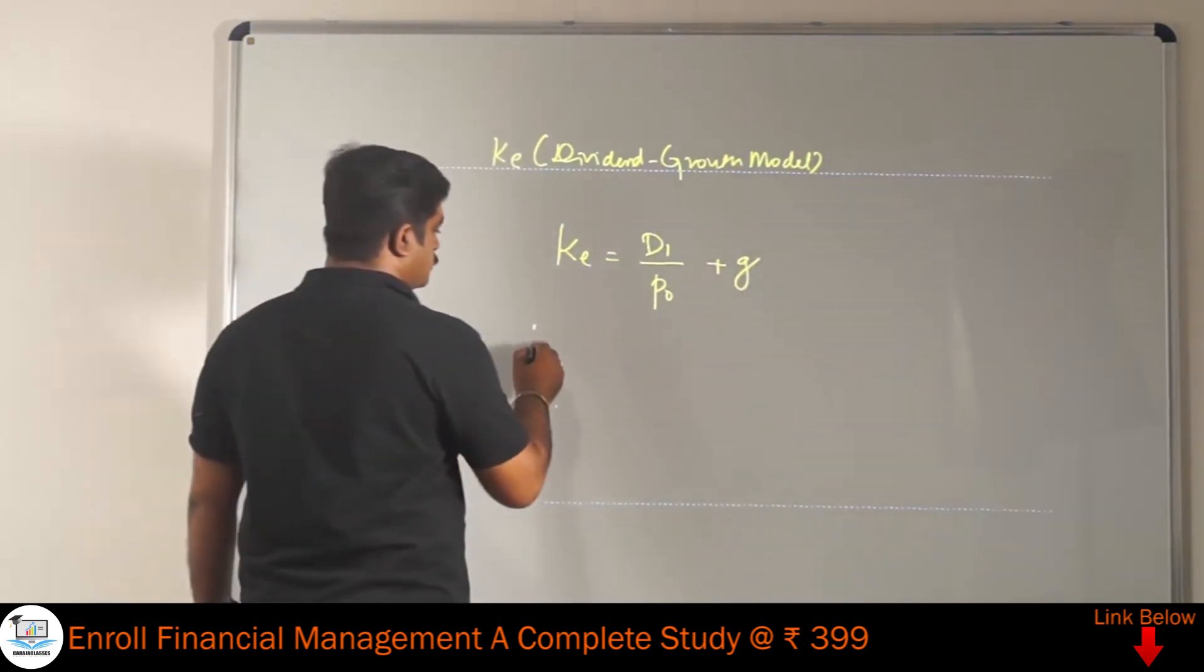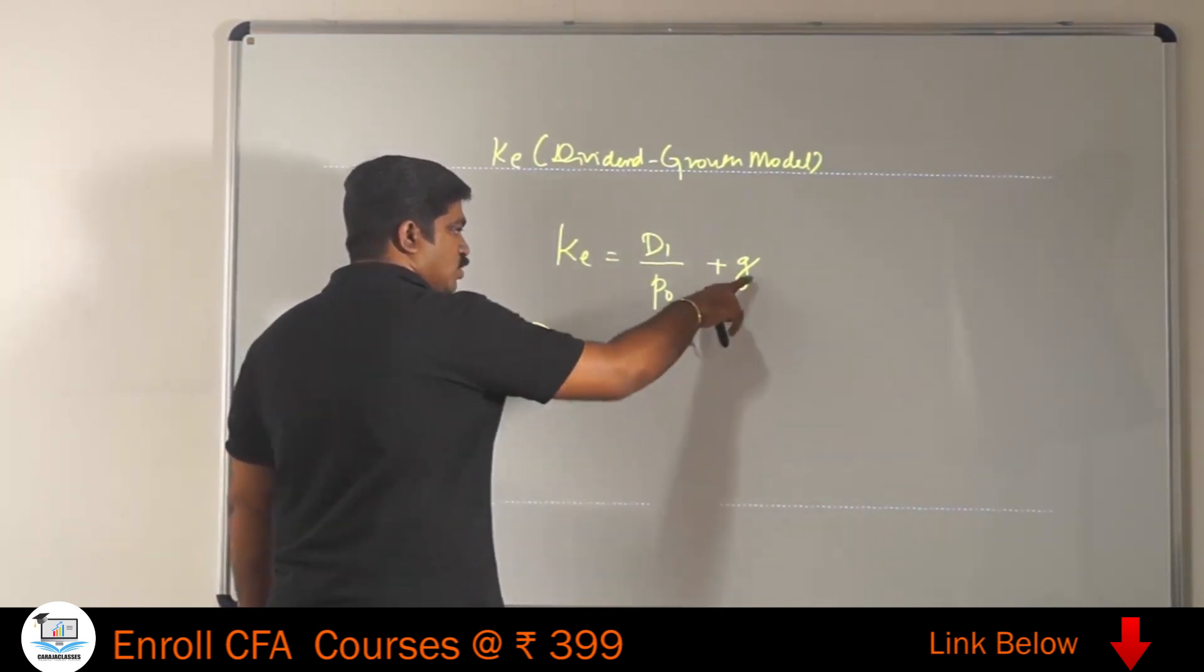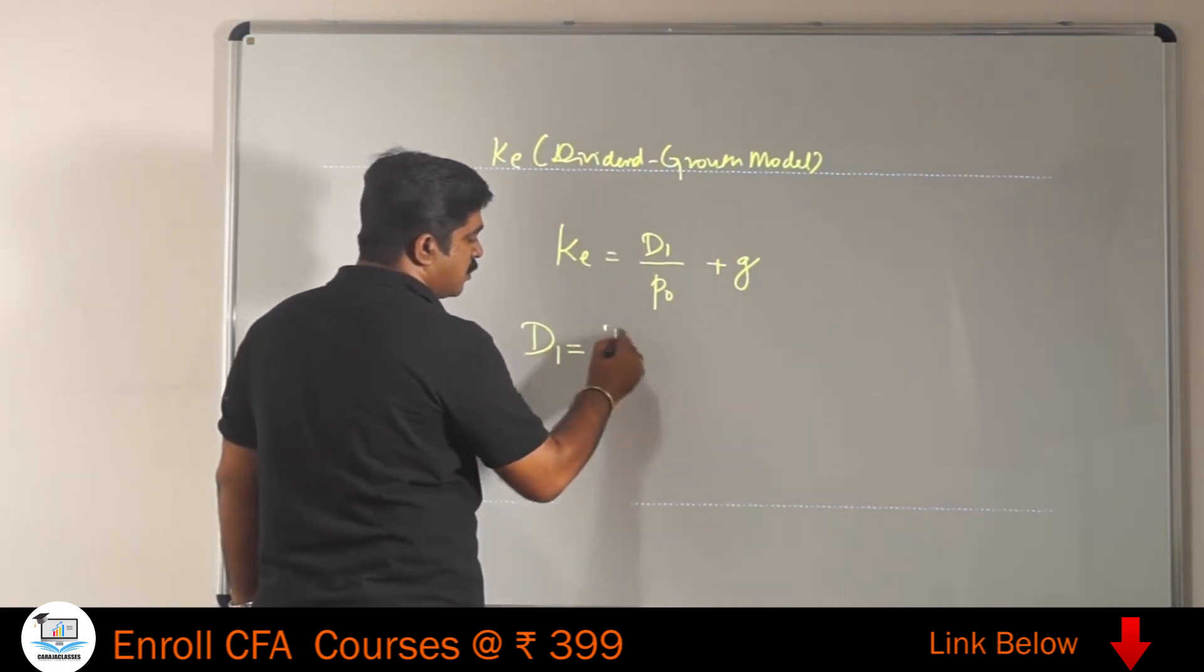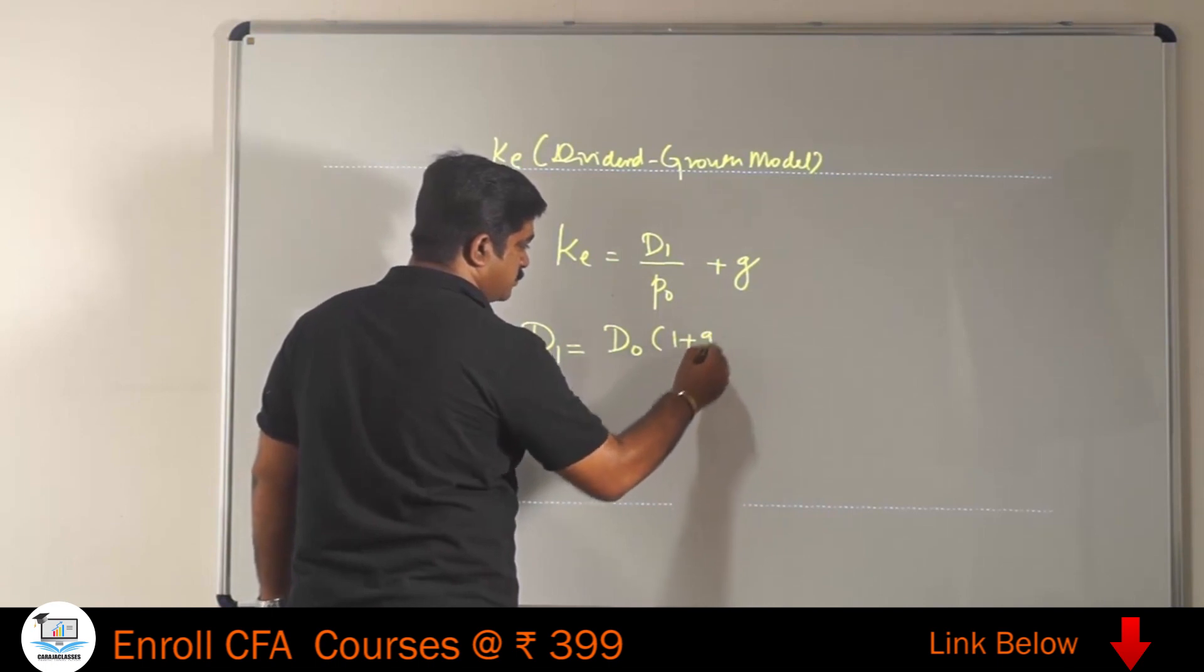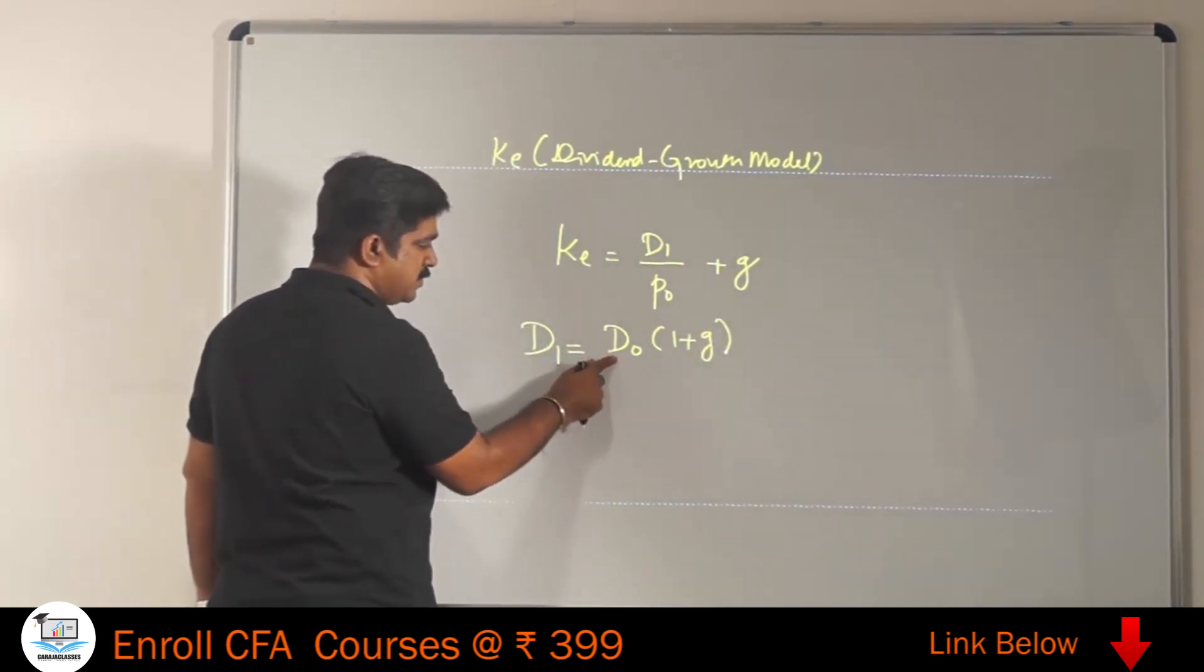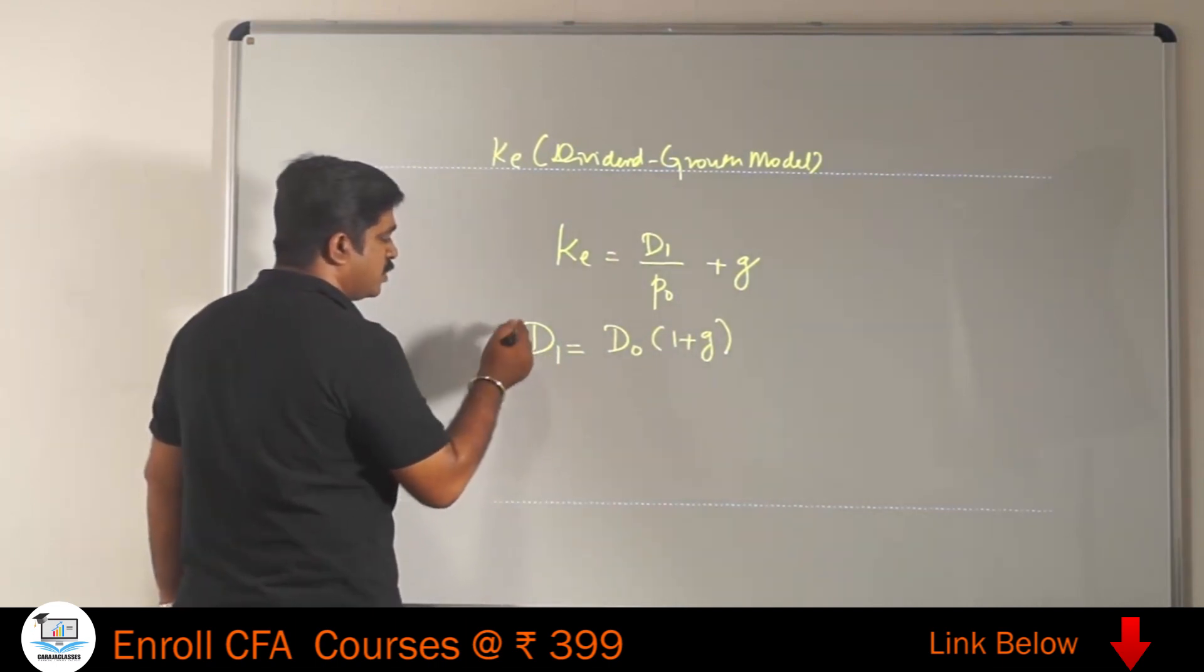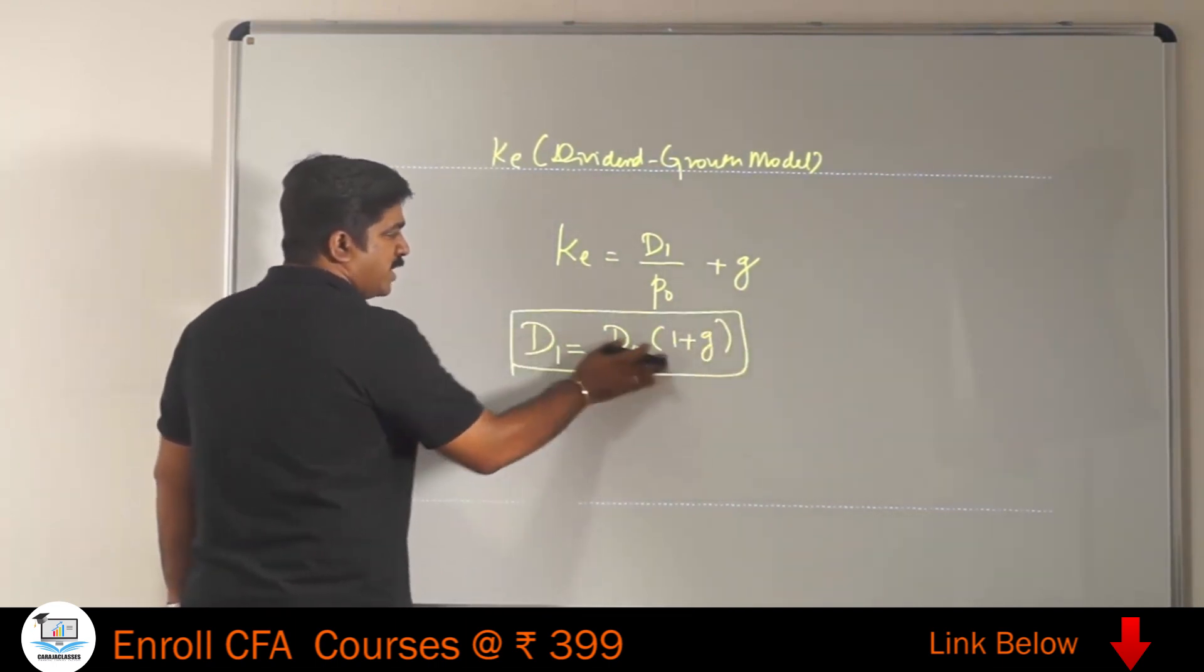What is D1? D1 is expected dividend. But since there is a growth element, we have a formula for D1. D1 is D0 multiplied by 1 plus G, where D0 is past dividend. That multiplied by growth will give D1. This is very critical.